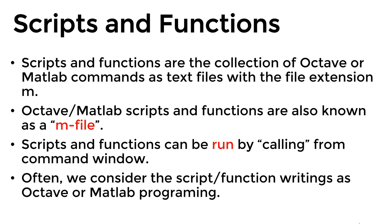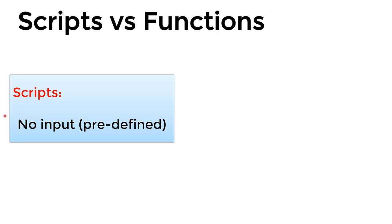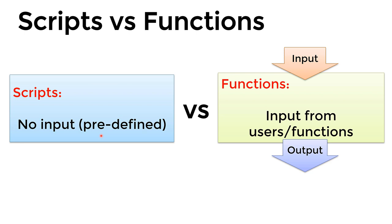The difference between scripts and functions: scripts already have all input variables defined inside them. Functions require input and output as part of their structure — they receive input, calculate something, and spit out an output. The schematic shows a script as a block containing commands with no external input, while a function block receives input, processes it, and returns output.